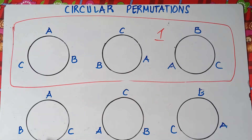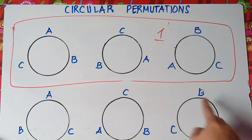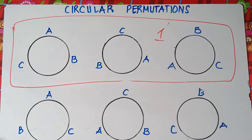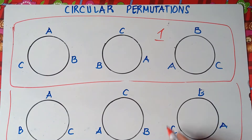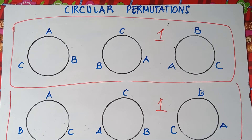Same thing — we rotate counterclockwise, and these three circles are counted as one. Why? We changed the position, but the arrangement is just the same.